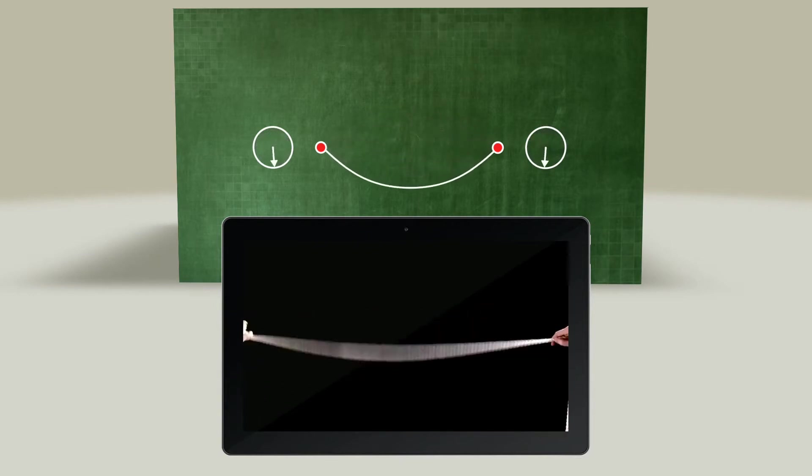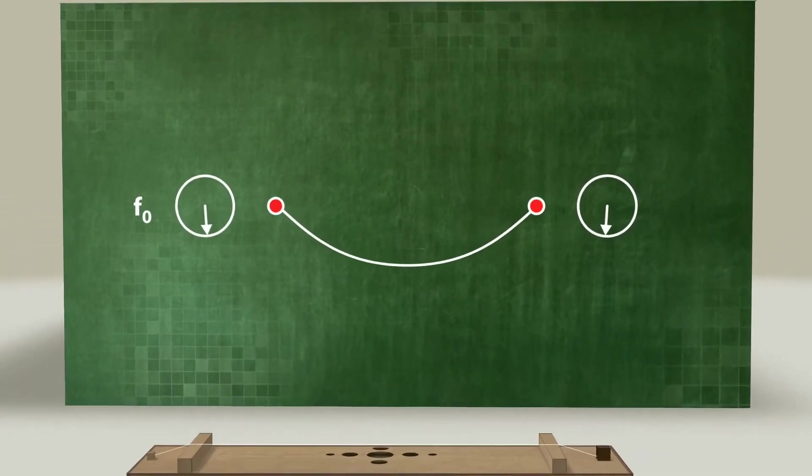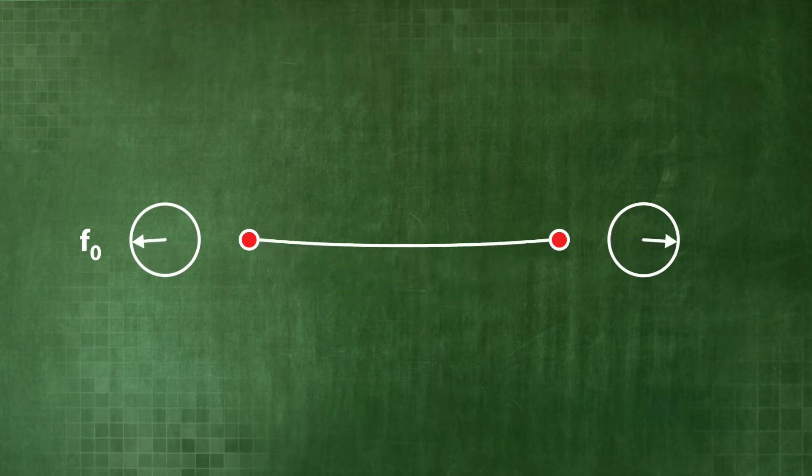The frequency of this standing wave is also F0. There are two nodes at the edges, where the string does not move. An antinode forms in the middle.